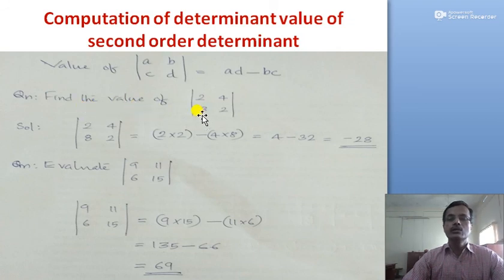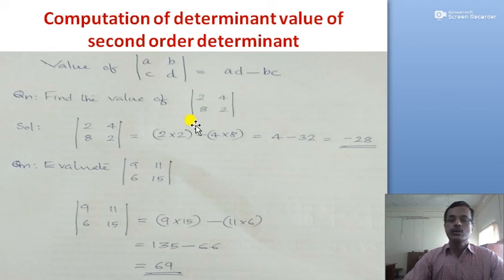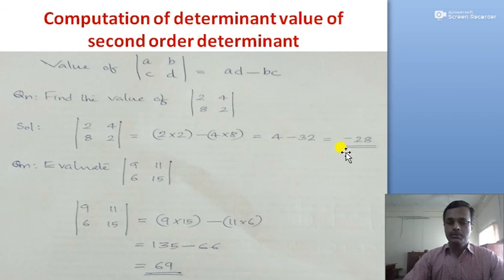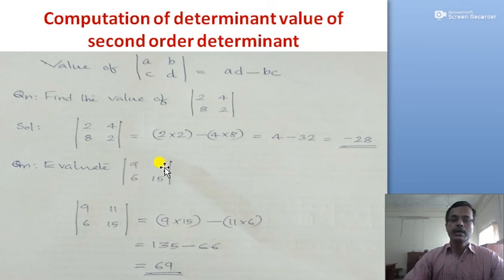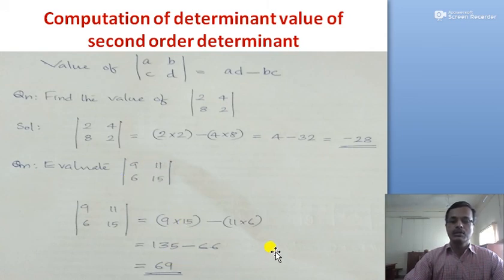Let us find the value of a determinant. For example, evaluating the determinant gives us 2×2 minus 4×8, which is 4 minus 32, equal to −28. Another example: evaluate the determinant |9, 11; 6, 15|. The answer is 9×15 minus 11×6, which equals 135 minus 66, giving a determinant value of 69.